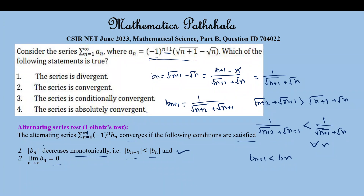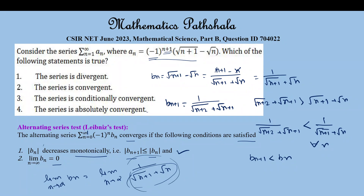Now we have to check the limit of b_n. The limit as n tends to infinity of b_n equals the limit as n tends to infinity of 1 / (√(n+1) + √n). As n tends to infinity, the denominator tends to infinity, so the whole term tends to 0. So the limit of b_n becomes 0.